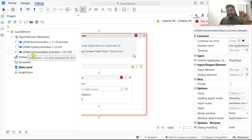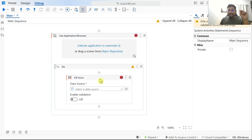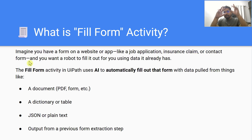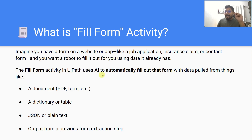If you have that package version, you should be able to see Fill Form. So what is the Fill Form activity? Imagine you have a form on a website or app — like a job application, insurance claims, or contact form — and you want a robot to fill it out for you using data it already has. The Fill Form activity in UiPath uses AI to automatically fill out that form with data pulled from a document, a PDF, or an Excel file.